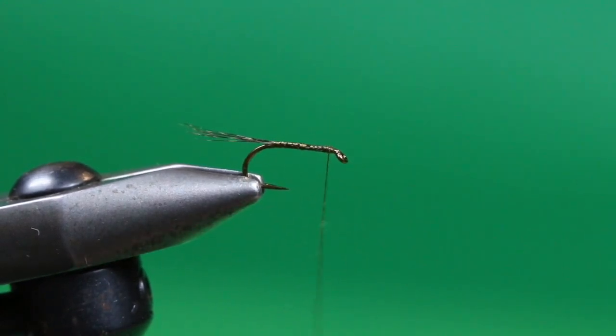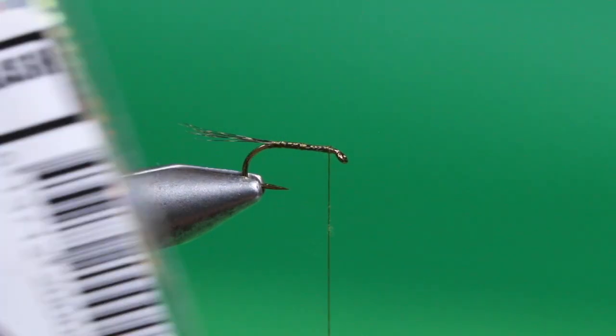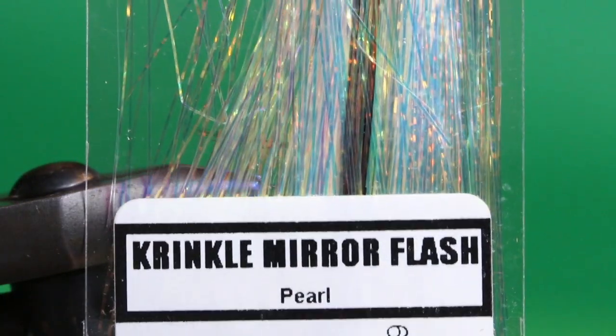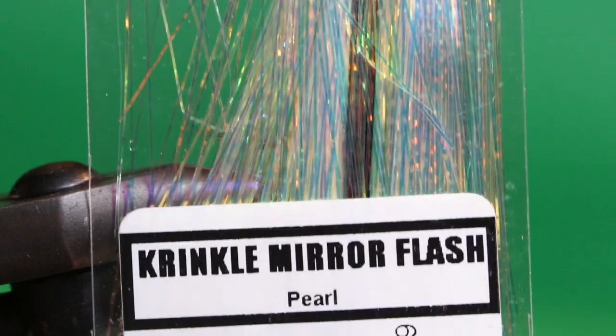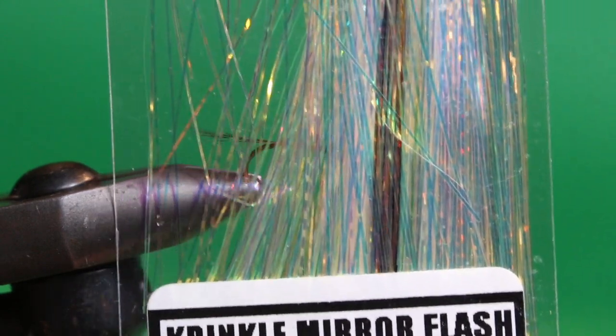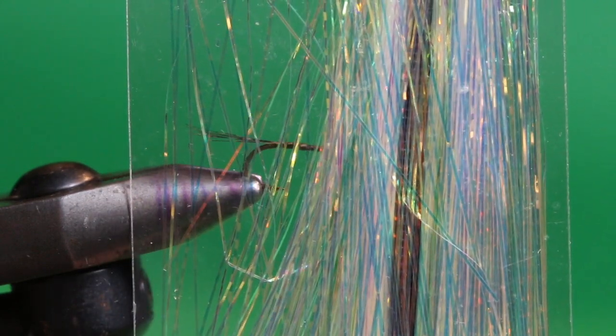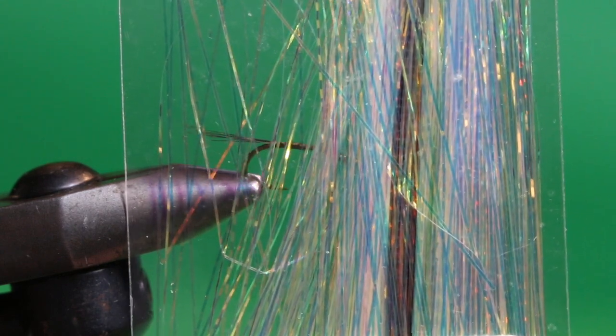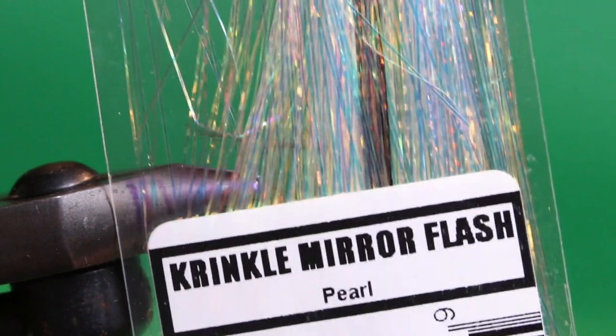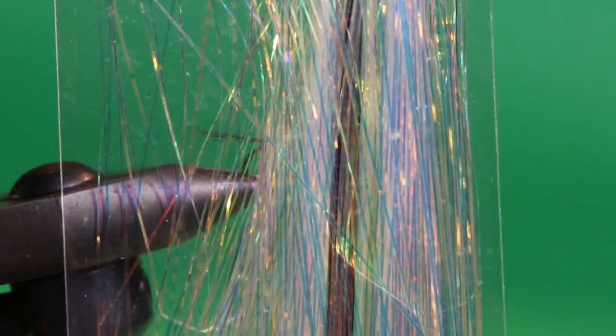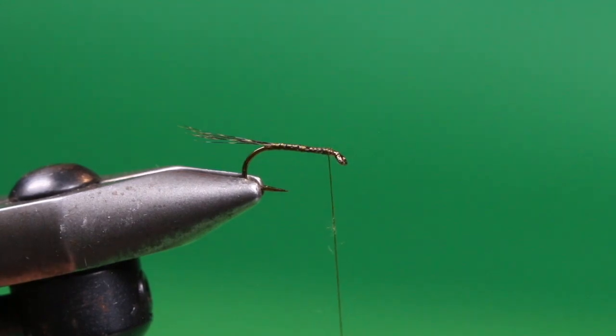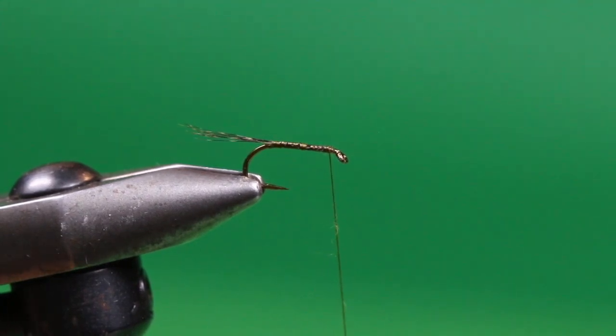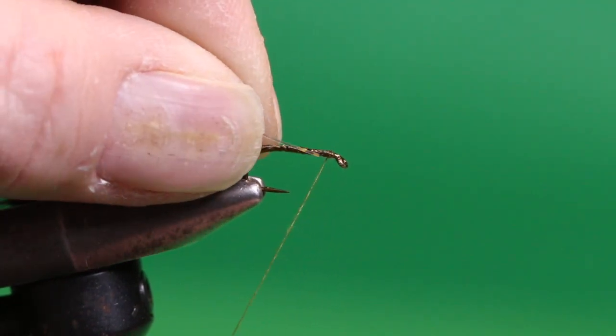For my ribbing, I like a little bit of flash, so I'm going to use some of my favorite ribbing materials, Crinkle Mirror Flash. If you don't have this handy, you could certainly use Mirage Opal Mylar or Flashaboo, Pearl Flashaboo, Pearl Crystal Flash, or whatever other color of flashing ribbing you care to use.